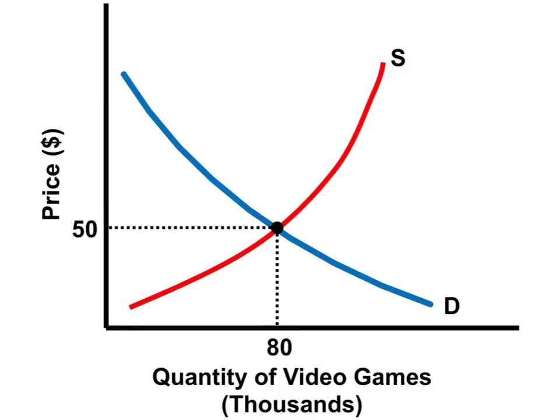Here is a market for video games in equilibrium. The equilibrium price is $50 and the equilibrium quantity is 80,000 video games. Now where does this equilibrium come from?